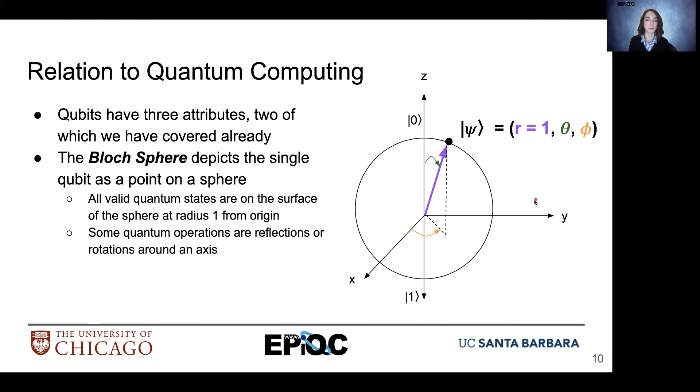So we already have learned about some operations that implement either rotations or reflections around the Bloch sphere. So we can also refer to these quantum operations as implementations of rotations of theta and phi around the Bloch sphere surface.